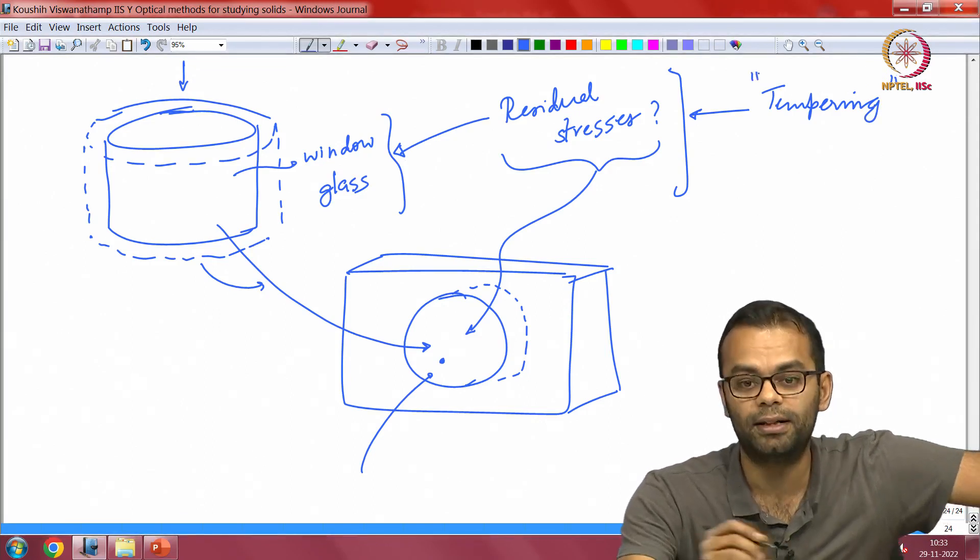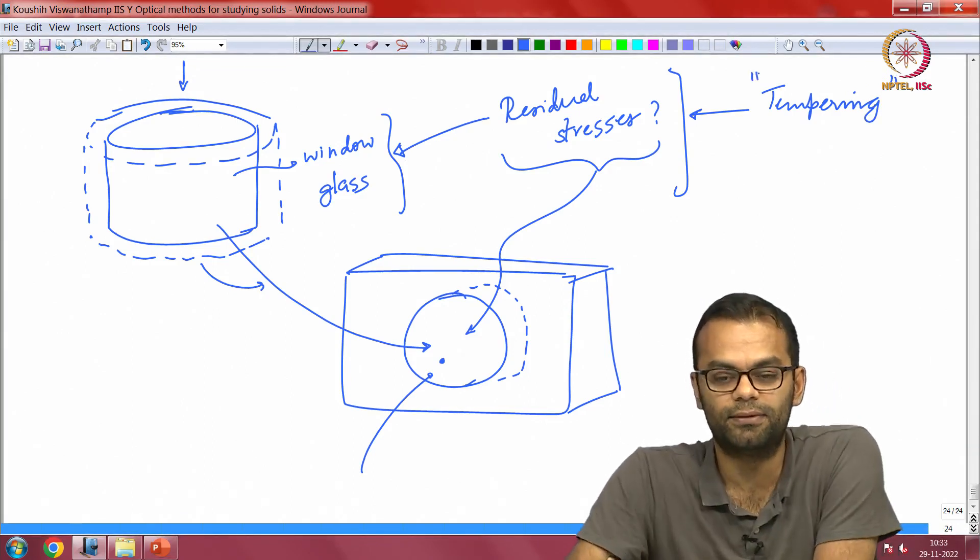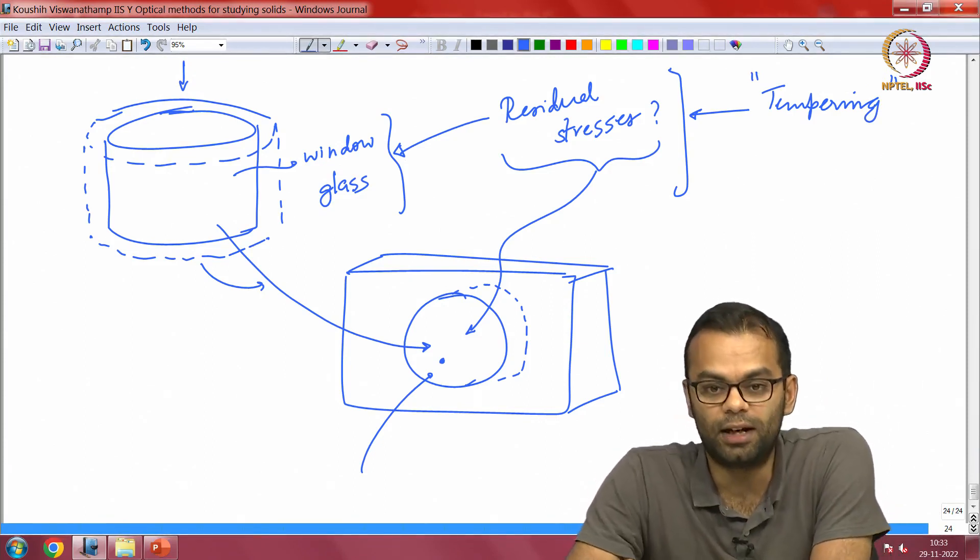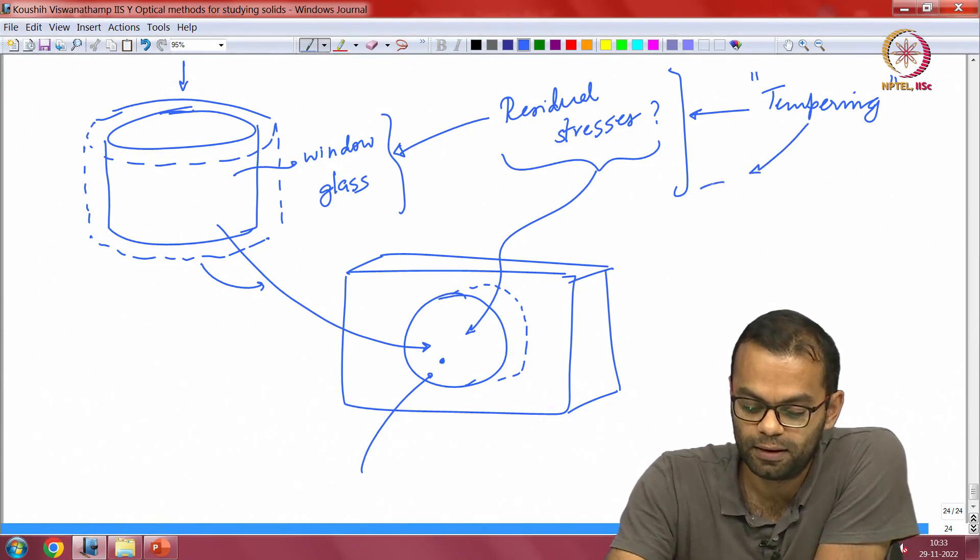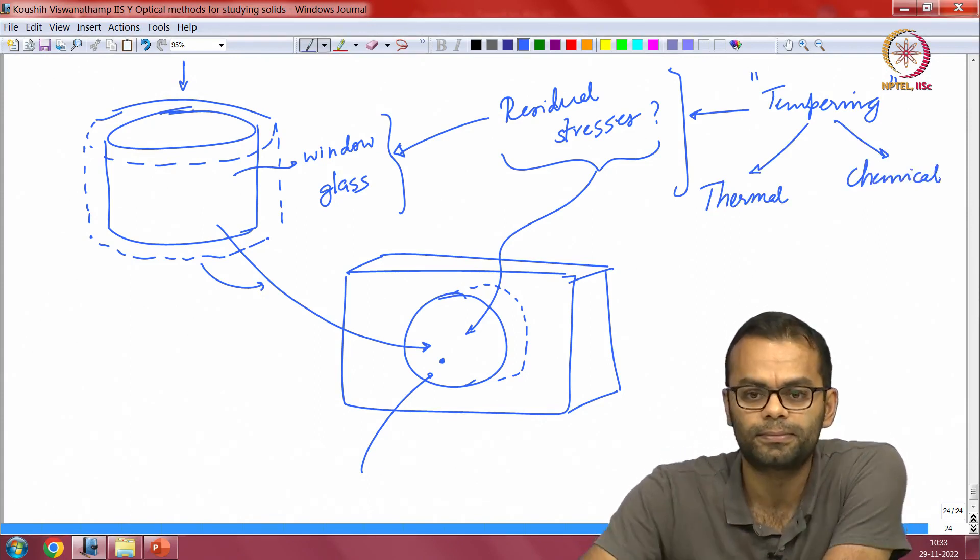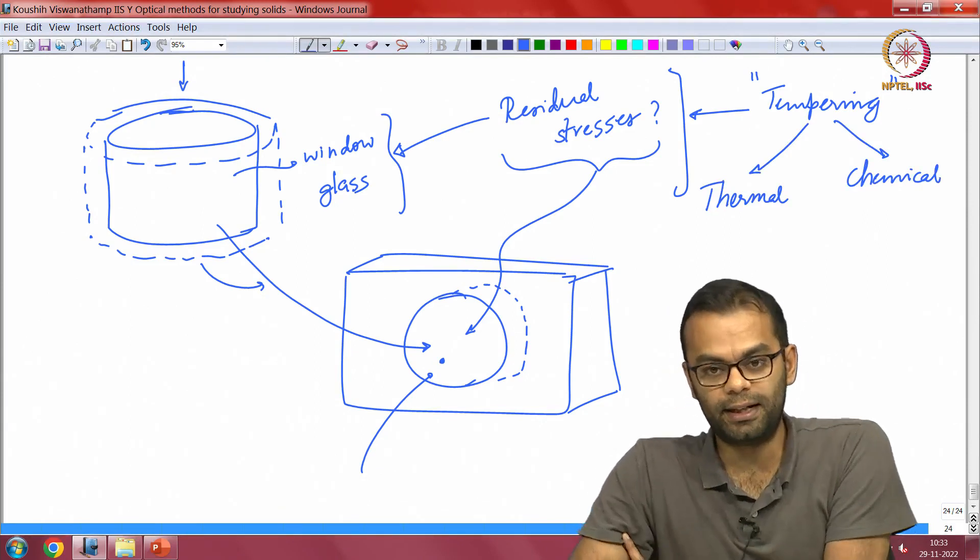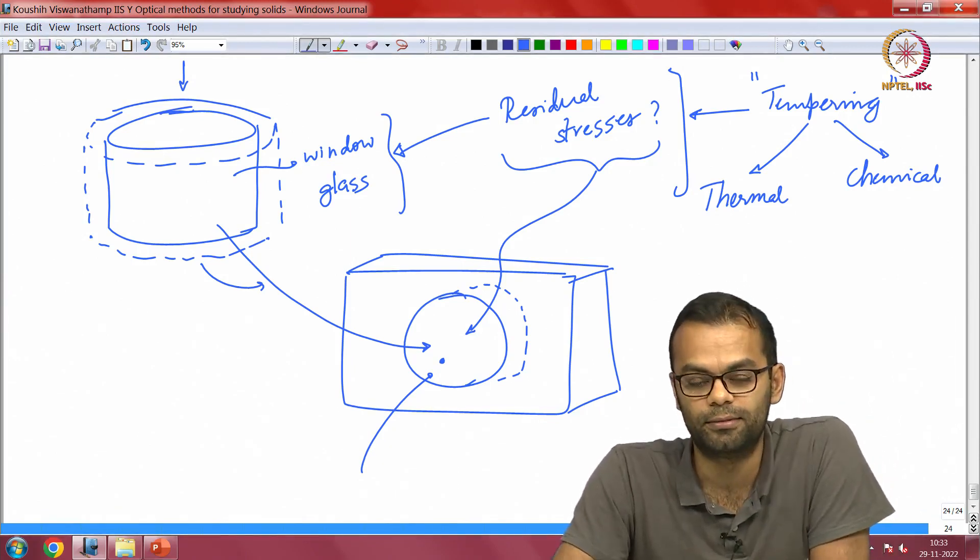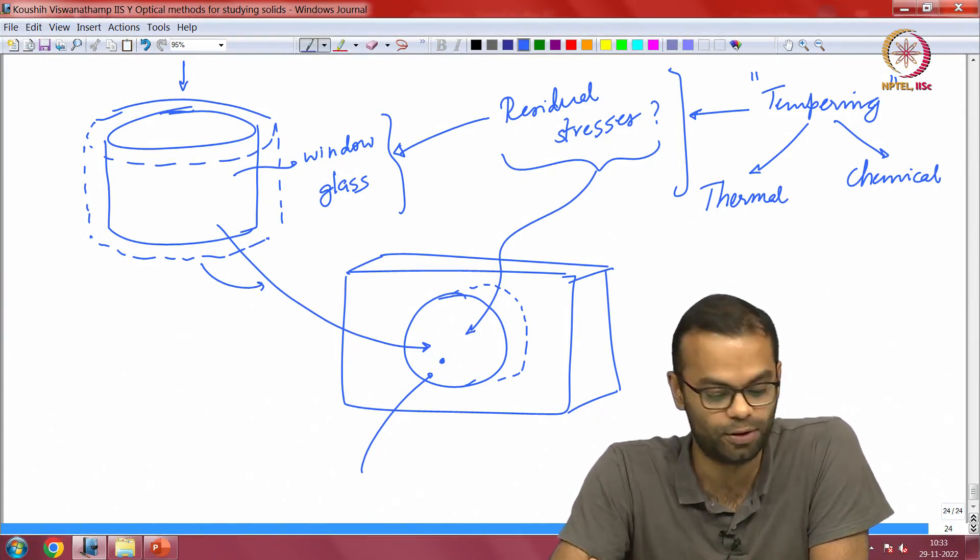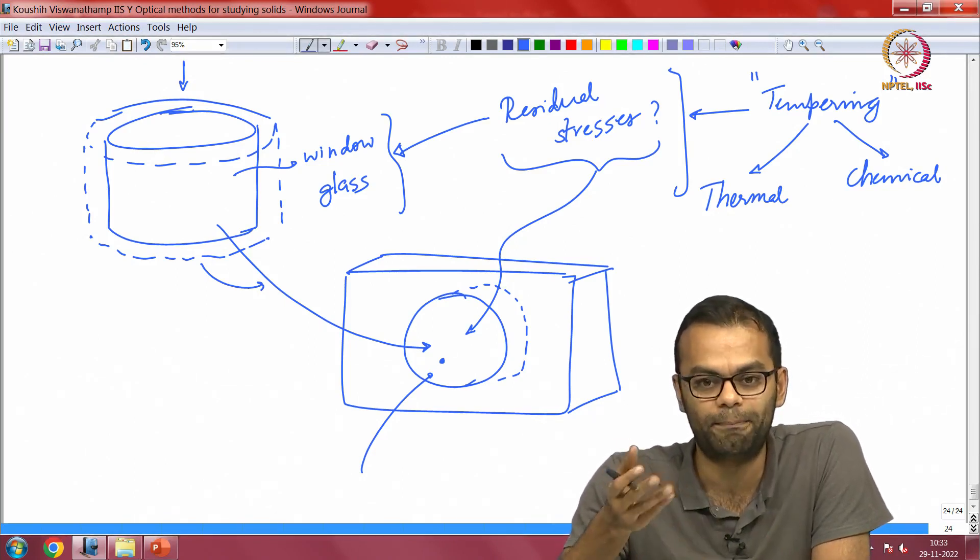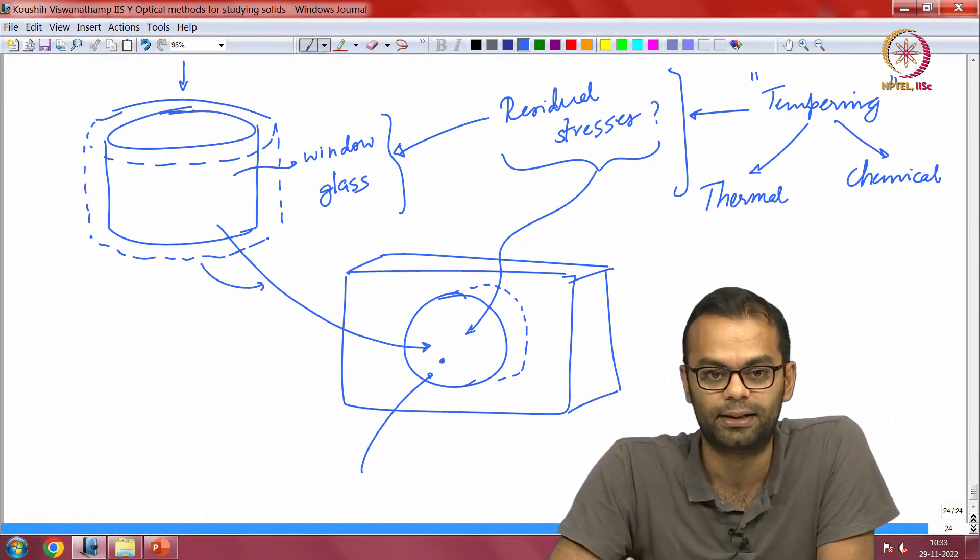Most of you, if you have taken a course in physical metallurgy, are probably aware of this term. But tempering is also done for glasses. There is something called thermal tempering and something called chemical tempering, and basically tempering induces residual stress. There are various ways of controlling what the stress distribution actually is in the glass and measuring it using photoelasticity. So that gives you some background for where some of these techniques find use.